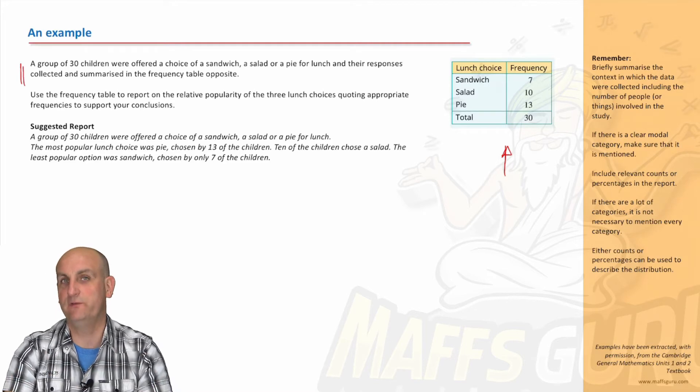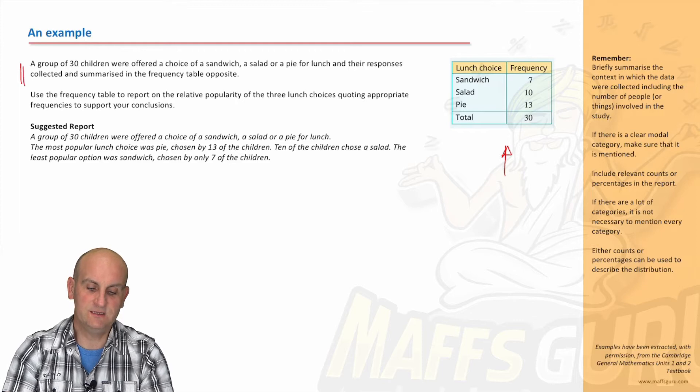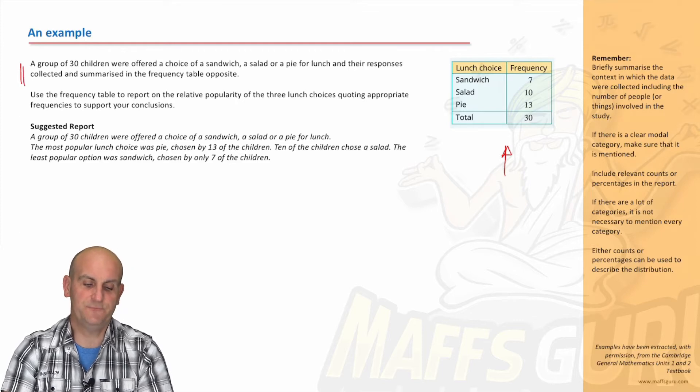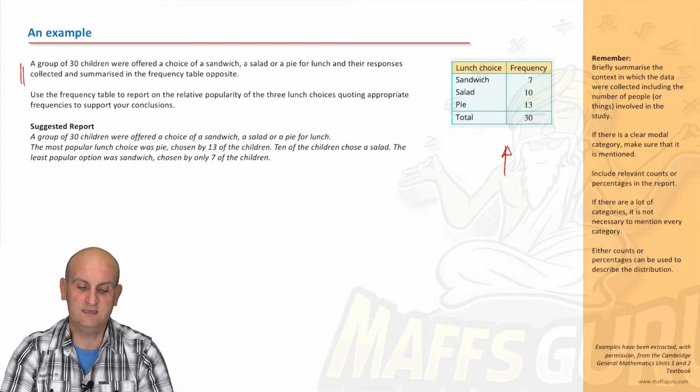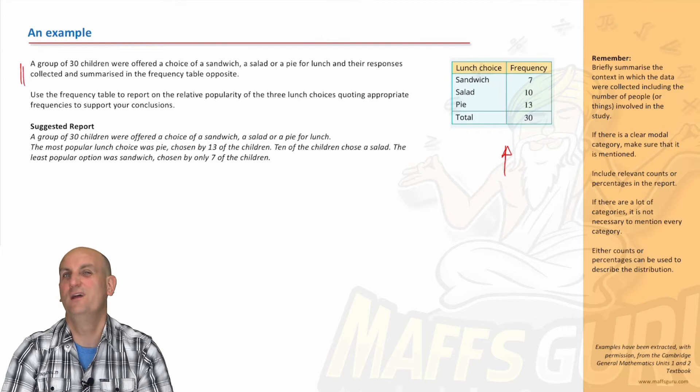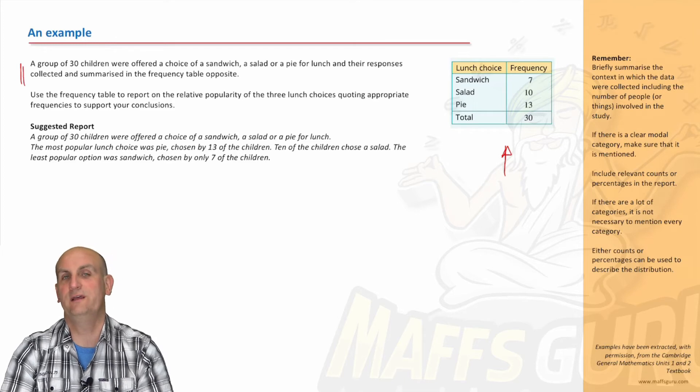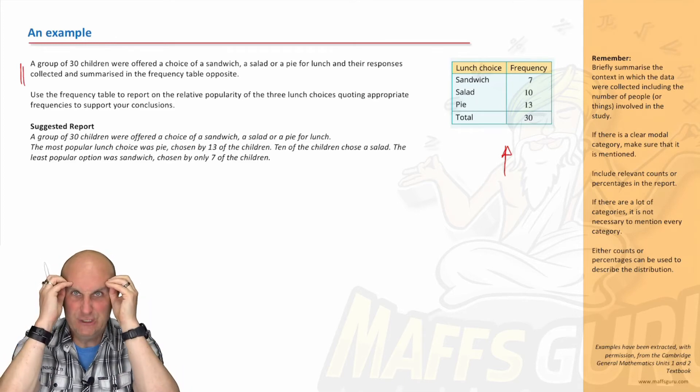Are we going to draw a bar chart? Well, we could draw a bar chart, but on the flip side, we actually can just see from the data here, which is the modal category, how many there were, and if we read the question, it says a group of 30 children were offered a choice of a sandwich. In my data of 30 children who were offered a choice of sandwich, pie or salad for lunch, I reckon my response is going to have something like that in it. The response is reflected and summarized in the frequency table opposite. Use the frequency table to report on the relative popularity of the three lunch choices. A lot of language there, it just means which was the most popular, which was the least popular. Talk about it.